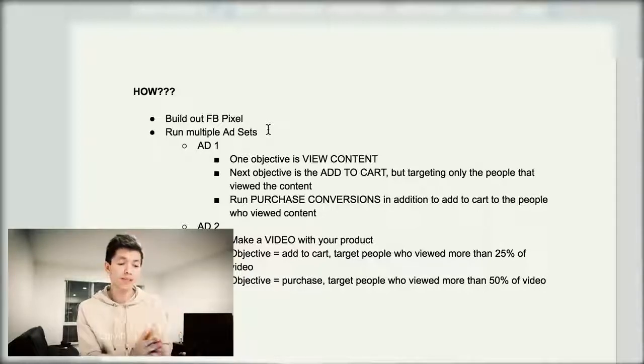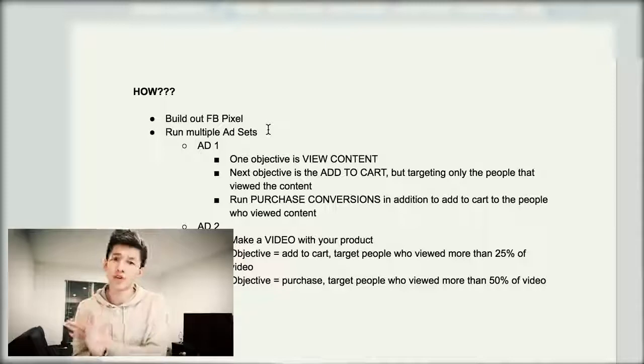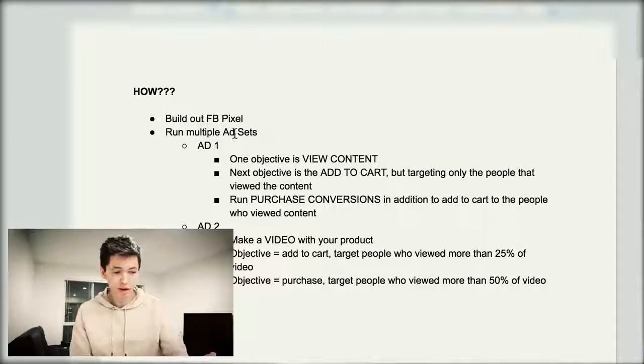The key to this is running multiple ad sets for different objectives at basically different certain intervals. Ad group number one: you're gonna run an ad objective that is purely for view content — view page content. You want to run this ad to get people to just look at the product page of your product, whatever you're selling. You just want them to look at it. If you can get them to click and look at your product, it means they're somewhat interested — they might purchase, they might add to cart, whatever. The whole objective is just to make them view content on your page.